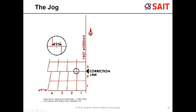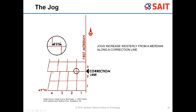Each of these jogs is 225 feet right after the meridian. As soon as you go past that meridian at the correction line, the jog increases as you go west - it keeps incrementally increasing by 225 feet. Then once you hit the next meridian, it resets, and you do it again. It always resets right after any meridian you come across.